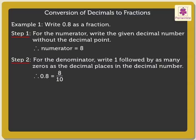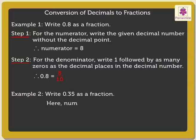Thus we get the answer as 8 upon 10. Now let's look at the next example: 0.35. Here the numerator is 35, and for the denominator write 1 followed by two zeros since there are two decimal places in the decimal number. Thus we get the answer as 35 upon 100.